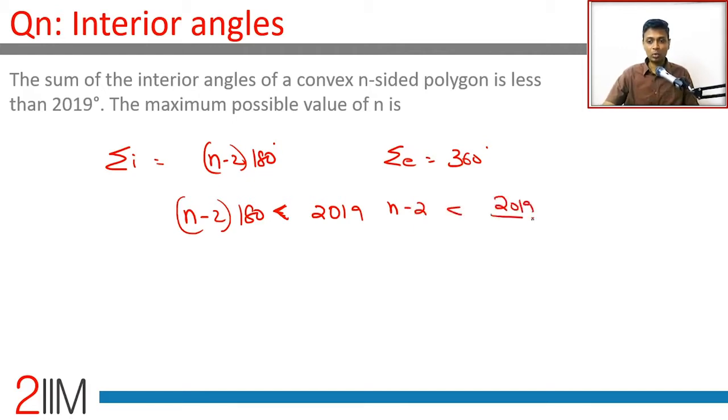180 × 10 is 1800. 180 × 11 is 1980. We cannot go much more than that, so n-2 is less than 11 point something.